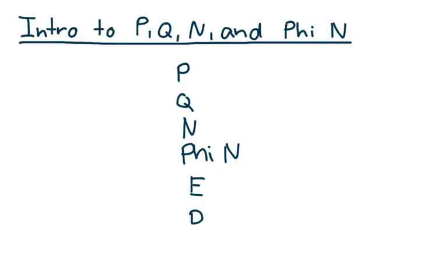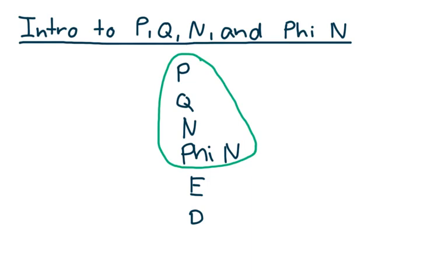Today we're going to talk about these four values of P, Q, N, and Phi N, and exactly how the key generator will go through and create values for these variables. We'll talk about E and D in my next video.